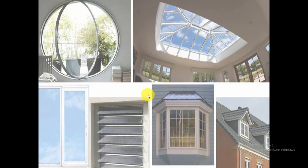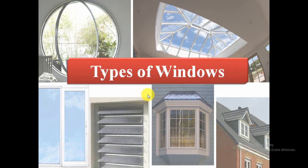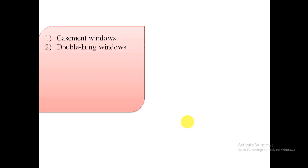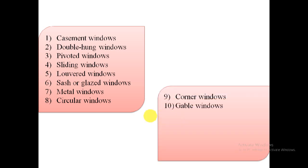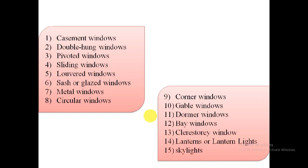Hello friends, thanks for clicking and welcome to my channel, only for civil engineers. In this video we will discuss about types of windows depending upon the manner of fixing, materials used for construction, nature of operational movements of shutters, etc. The common varieties of windows used in buildings can be grouped as follows: casement windows, double hung windows, pivoted windows, sliding windows, louvered windows, sash or glazed windows, metal windows, circular windows, corner windows, gable windows, dormer windows, bay windows, clerestory windows, lantern lights, and skylights.